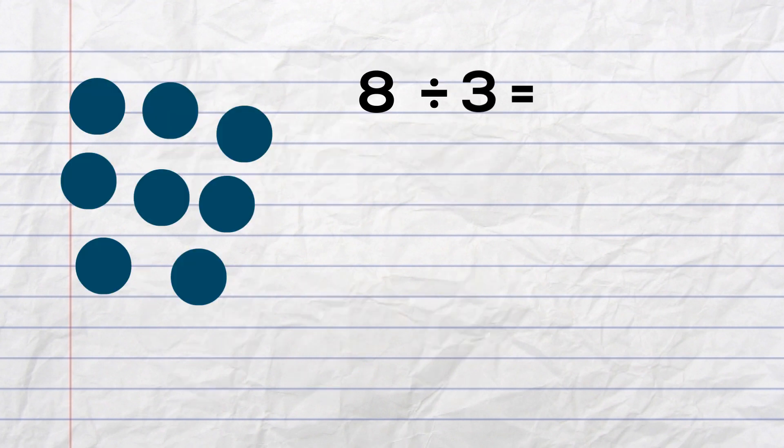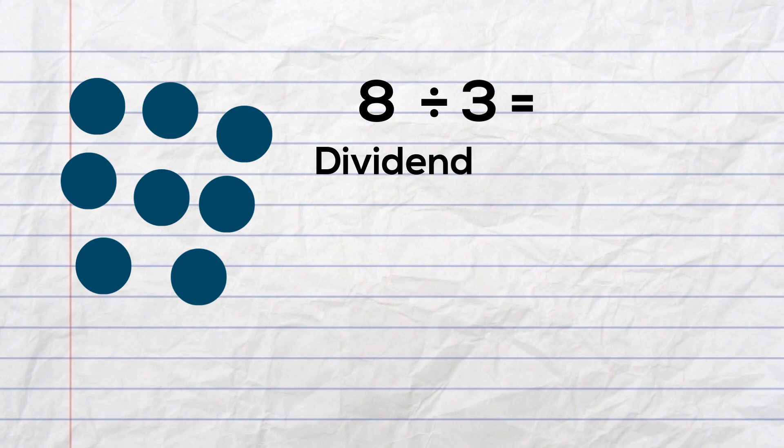In this first example, we will divide 8 divided by 3. 8 is our dividend, so we will use circles to represent the 8. The 3 is our divisor, and it tells us how many are in each group. I will create columns, so each column will have 3 circles in it. Then I will count the number of columns, and that will give us our quotient or answer.